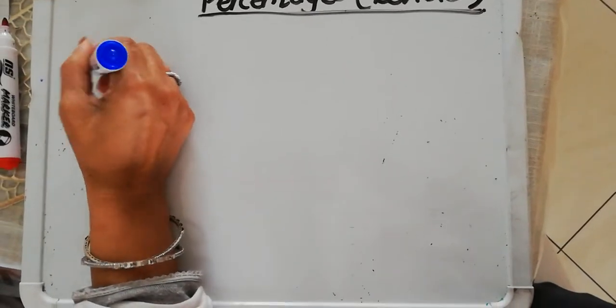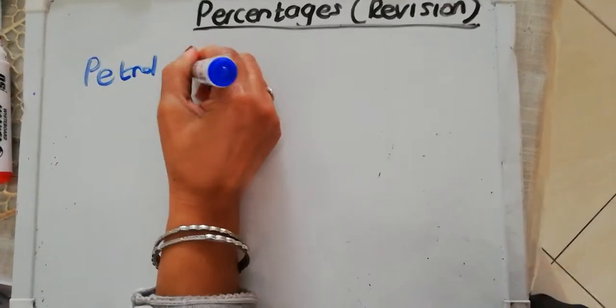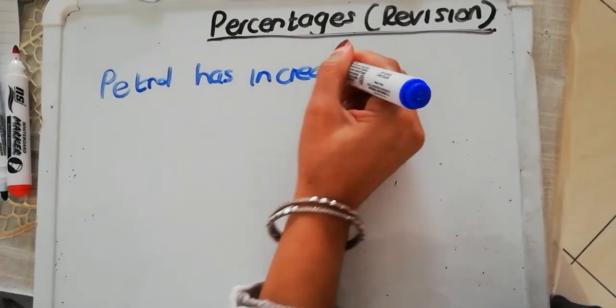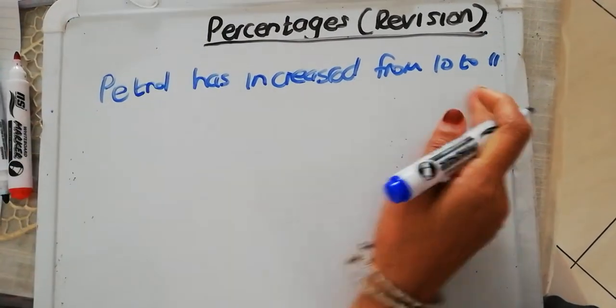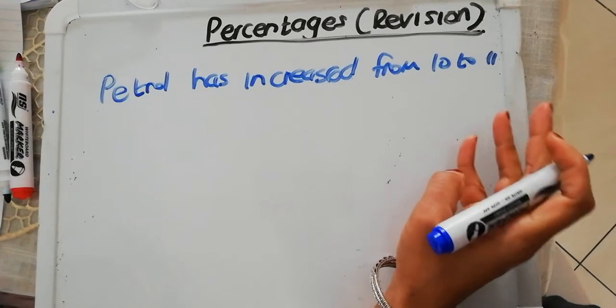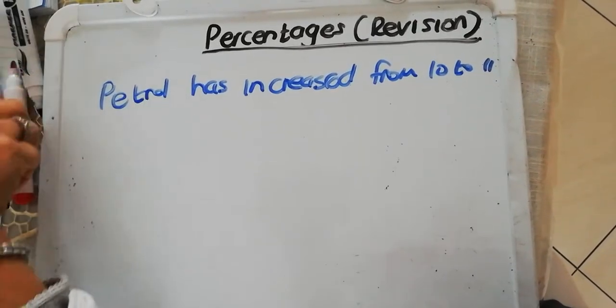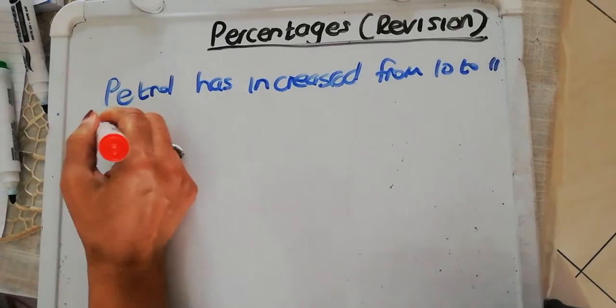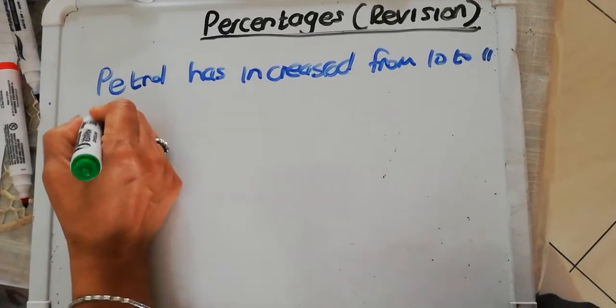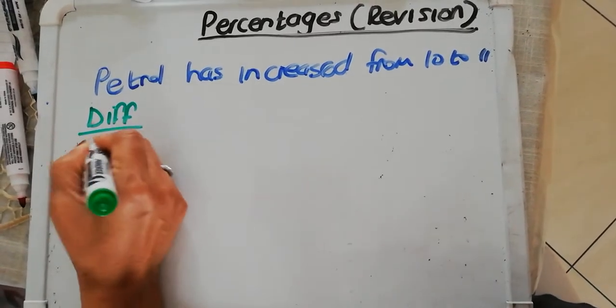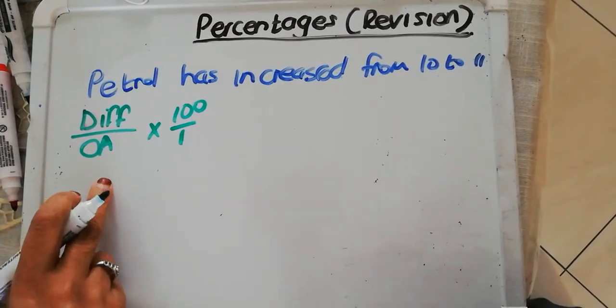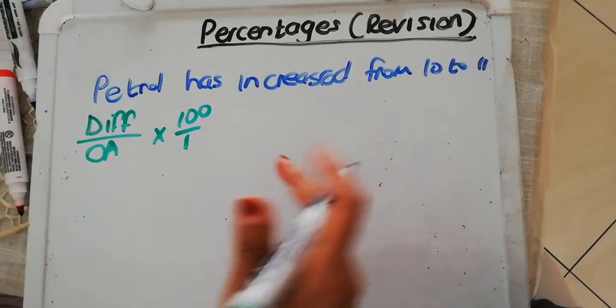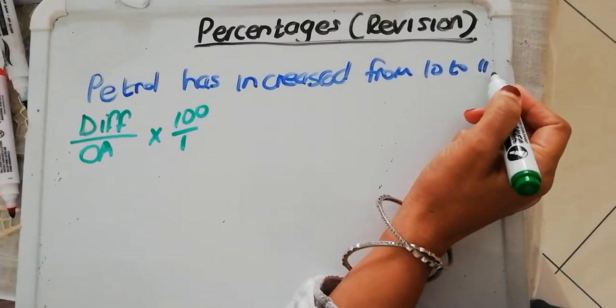Now what if I have a question like this here? Petrol has increased from 10 rand to 11 rand. The petrol has increased from 10 rand to 11 rand, but what is the percentage increase? They want to know what is the percentage increase. So here, you need to apply a formula. We call it the difference over original amount times 100 over 1. Now, I'm sure you're familiar with this because we have done it in term 1. Like I say, this is a recap.